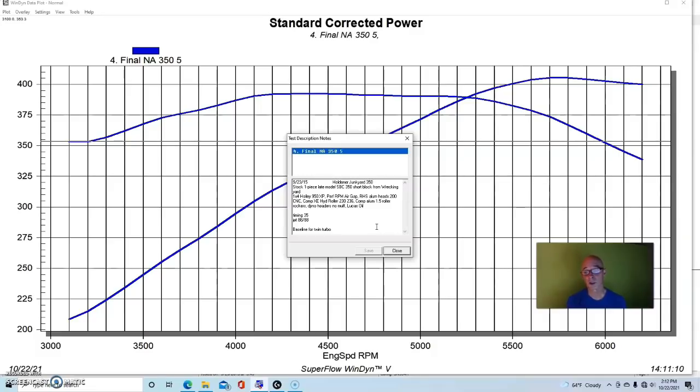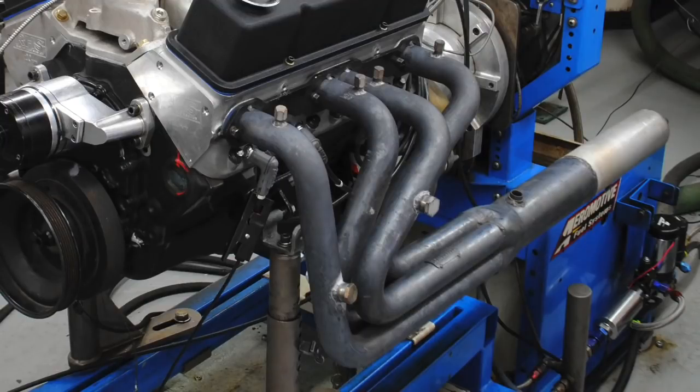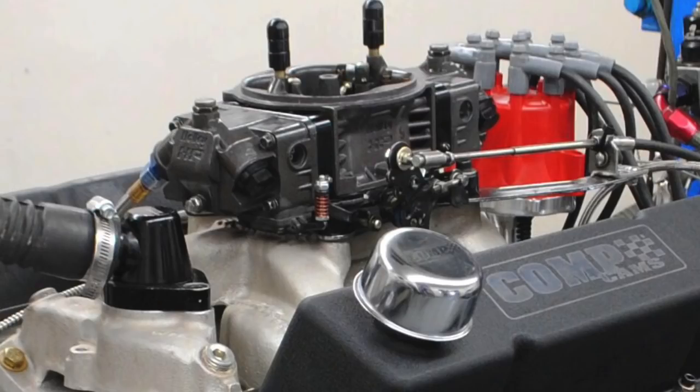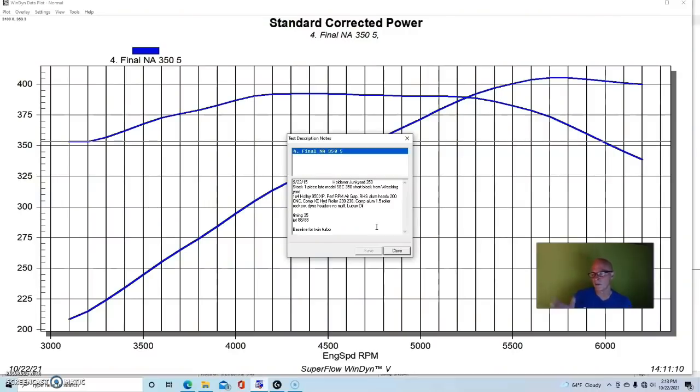Yes, the tight LSA works with a turbo or twin turbos in this case. We also installed Comp aluminum 1.5 gold roller rockers. We had dyno headers on it, we had a single 950 XP carburetor, more carburetor than we need, probably. The 950 was laying closer than the 750 that we could have used.